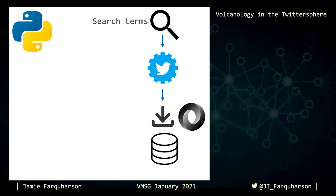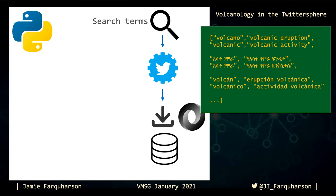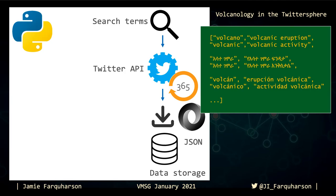The search strings are all translations of four keywords or phrases: volcano, volcanic, volcanic eruption, and volcanic activity. Tweets containing these strings are crawled by the Twitter API, downloaded in JSON format, and stored locally, and this process is repeated every 24 hours.